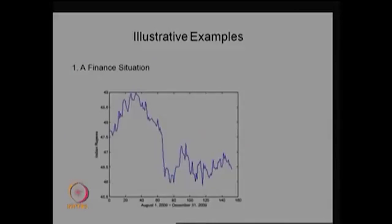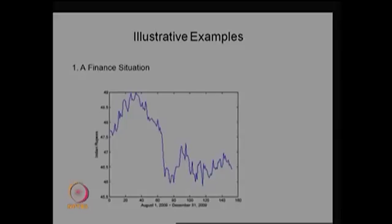Let us see the first example from a finance situation. This is actual data captured over the period from August 1, 2009 to December 31, 2009, showing the price of 1 US dollar in Indian rupees. From the graph, on August 1, 2009, the price of 1 US dollar was 47 rupees 57 or 58 paise. Over the days, it keeps changing — it takes some higher values, then goes down, and fluctuates.